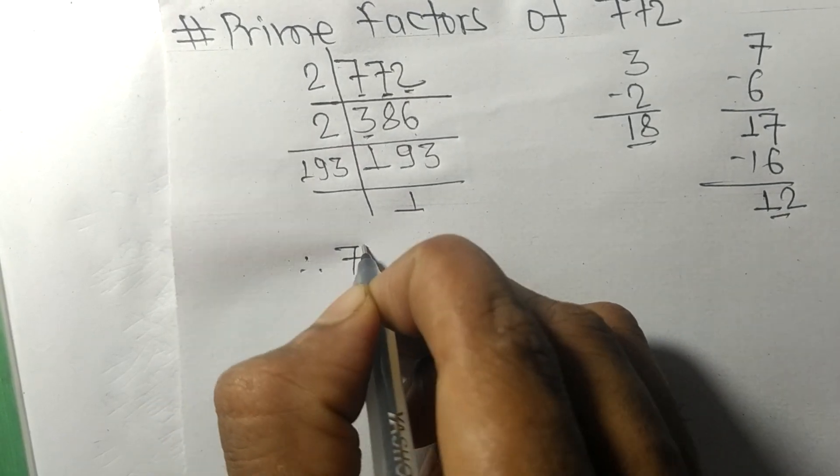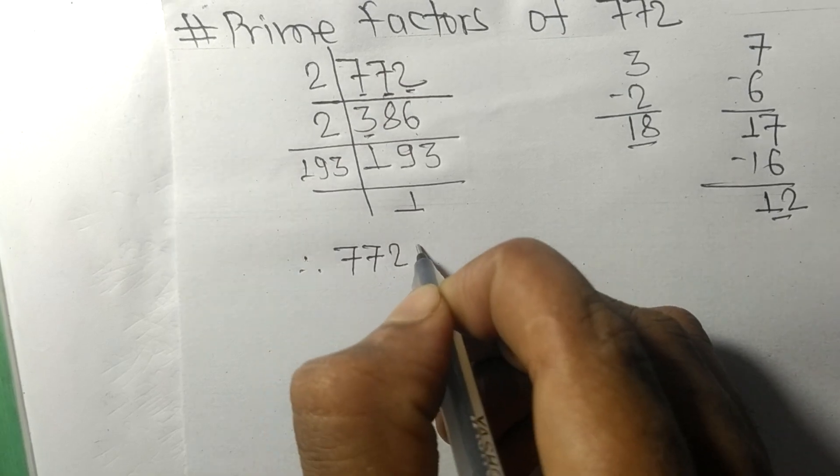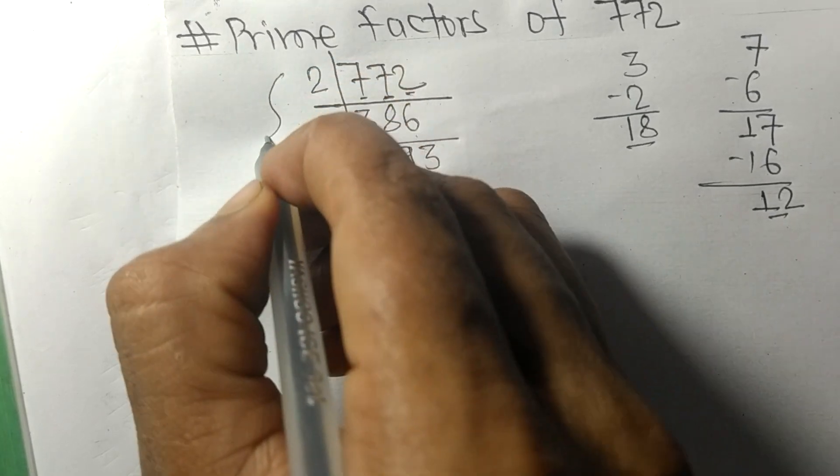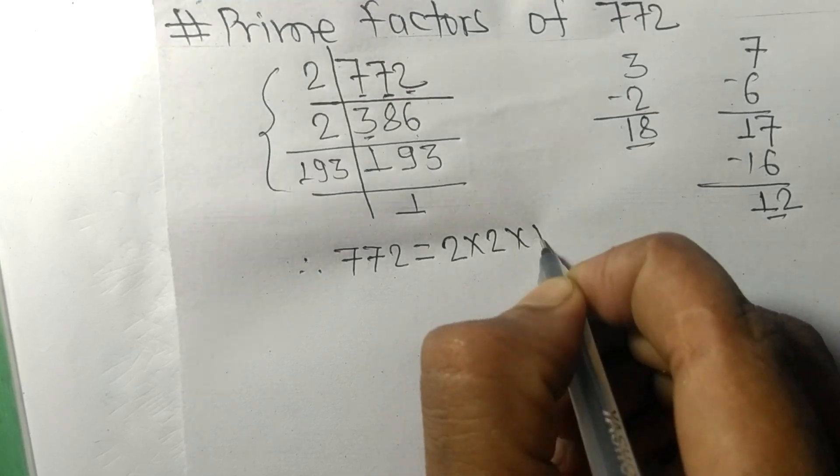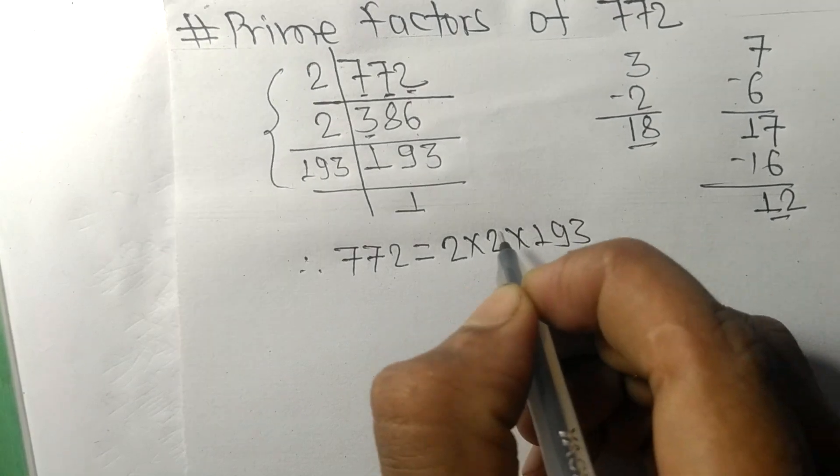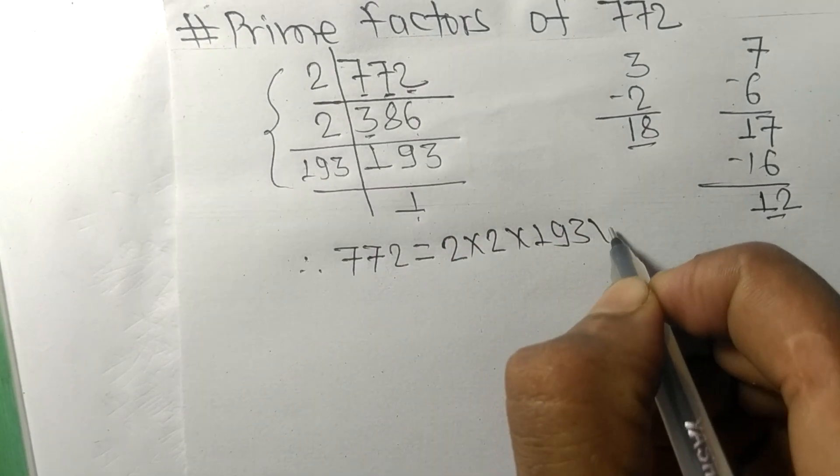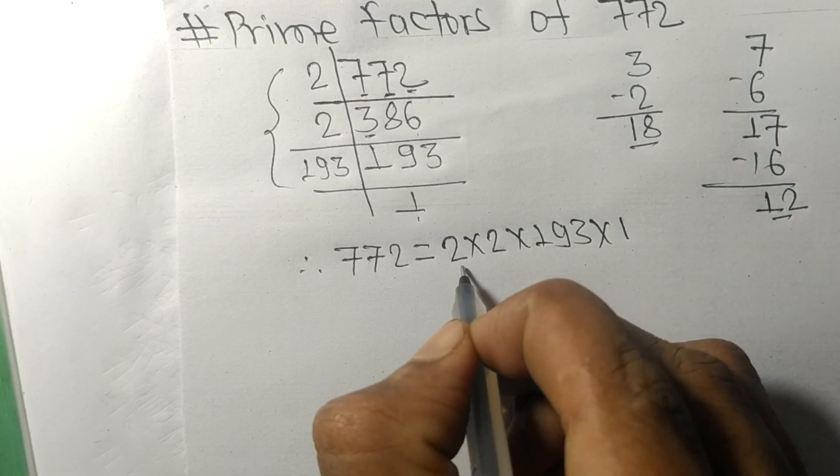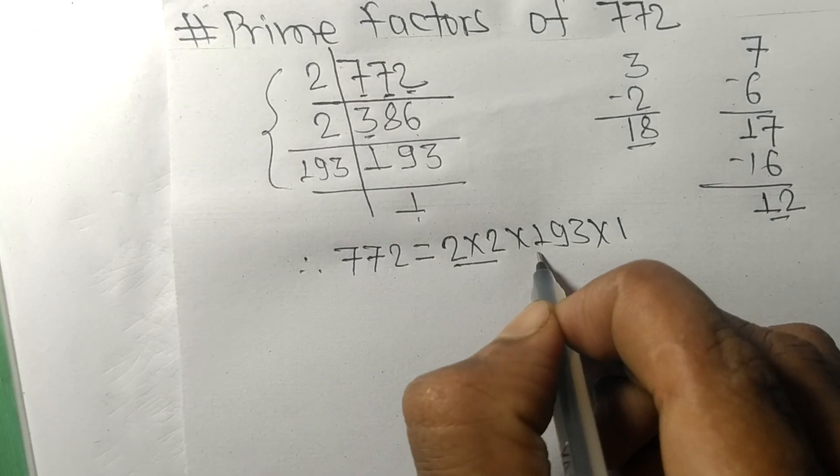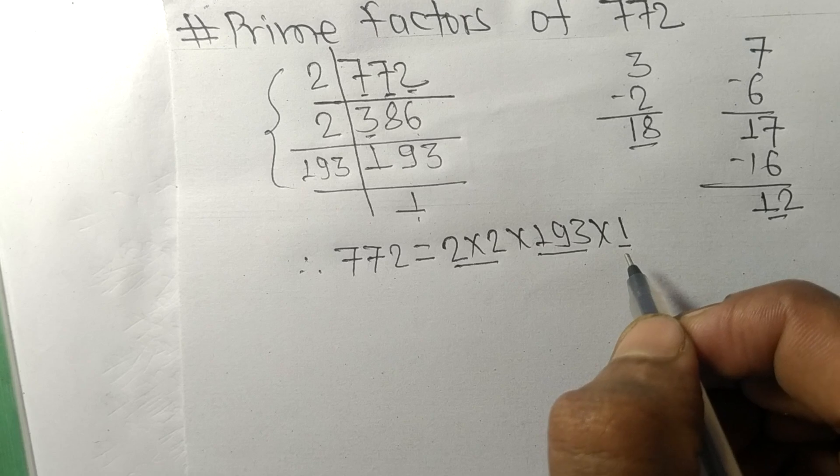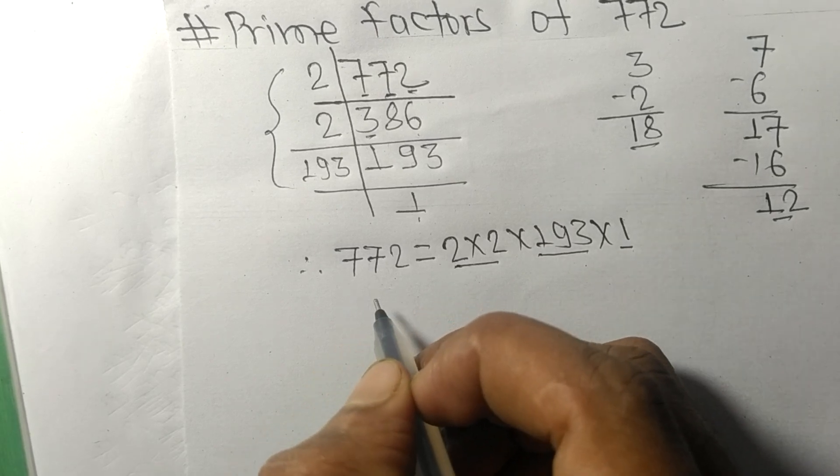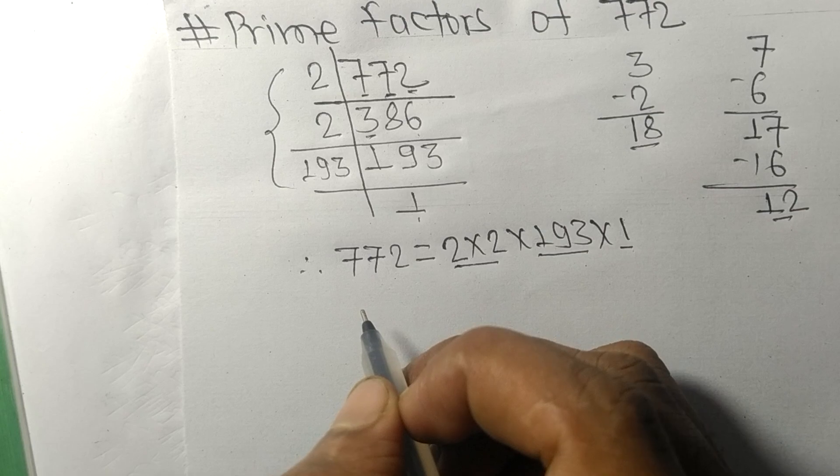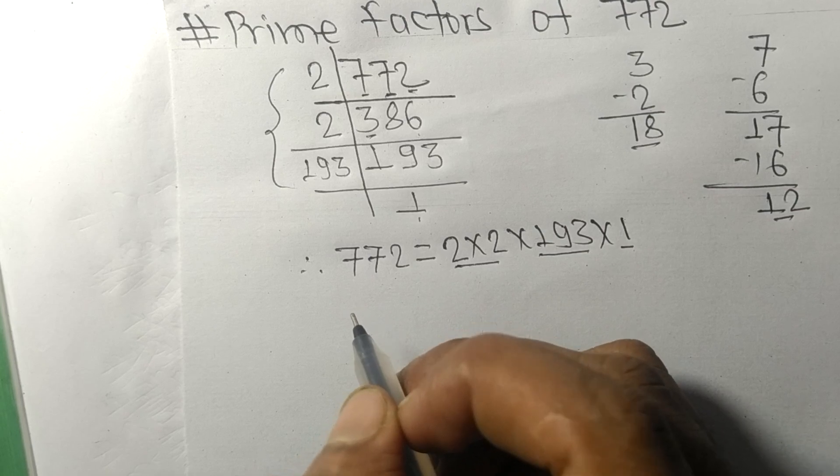Therefore, 772 is equal to, from this side, two times two times 193, and from here it is one. So two, 193, and one are the prime factors of 772. So this much for today and thanks for watching.